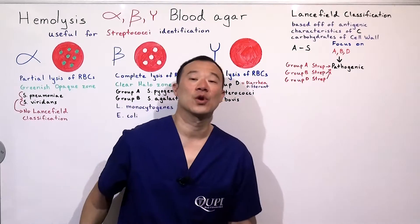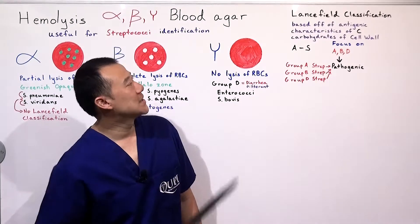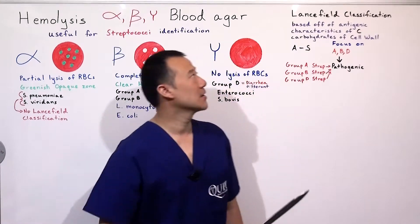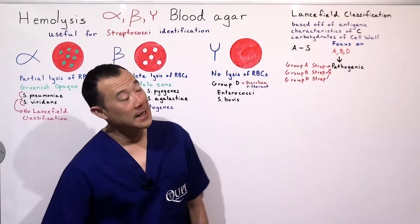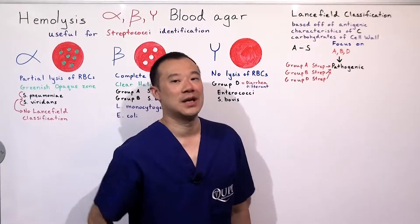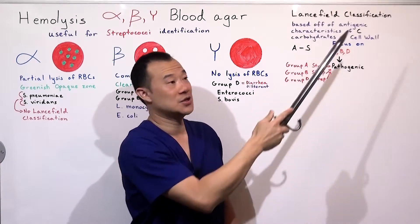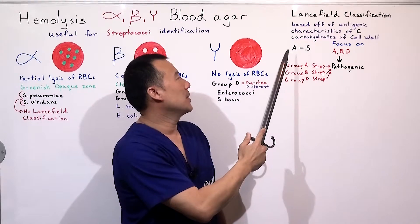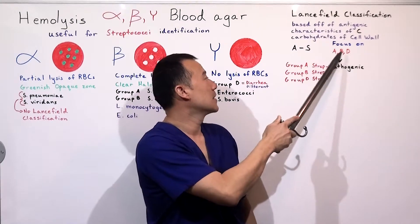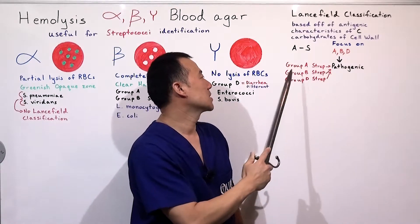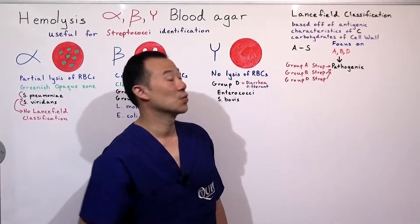Lancefield classification — very quickly, since we mentioned it. Lancefield classification is based off of antigenic characteristics of the C carbohydrates of the cell wall. Basically, an antigen is presented and if the C carbohydrate differs based on antigenic characteristics, you can group them A through S. The only ones we care about are A, B, and D — Group A Streptococcus, Group B Streptococcus, and Group D Streptococcus. These are pathogenic.